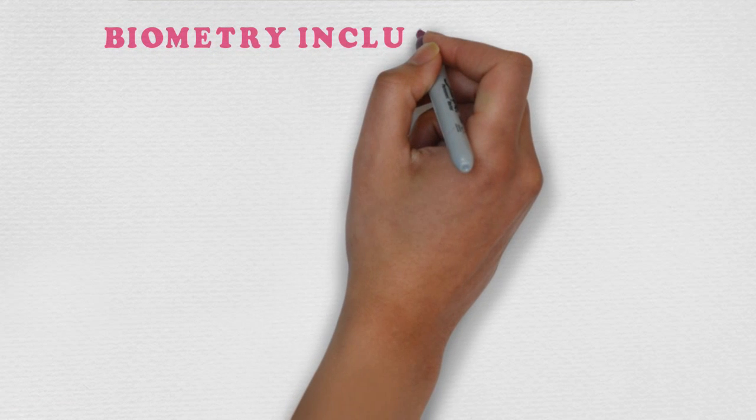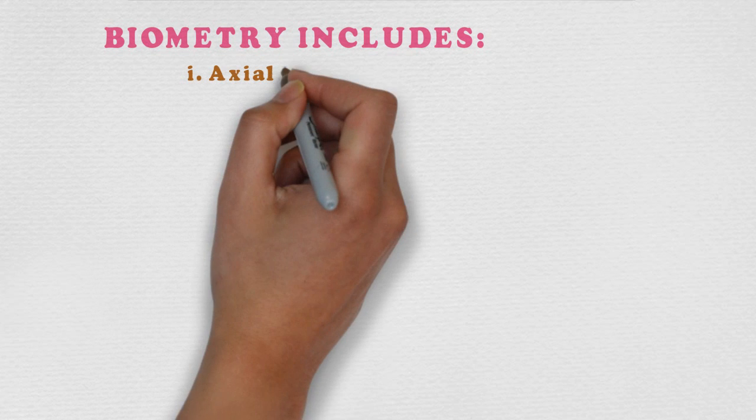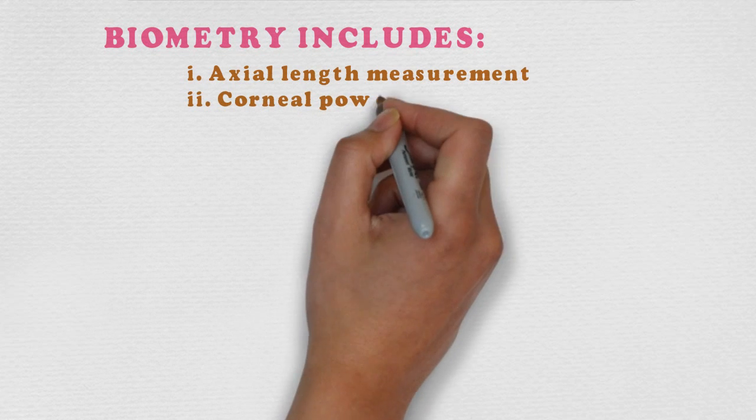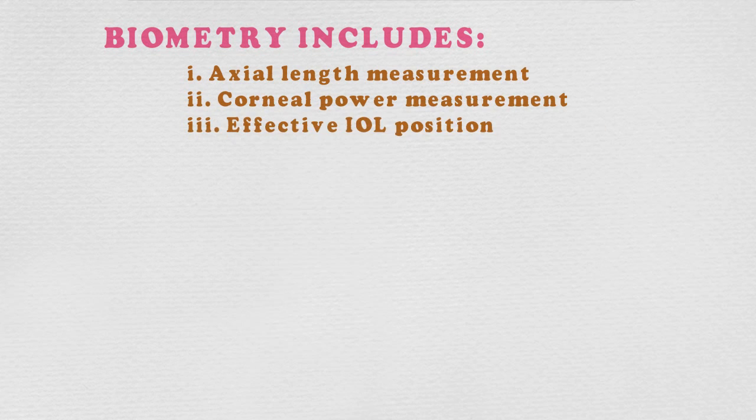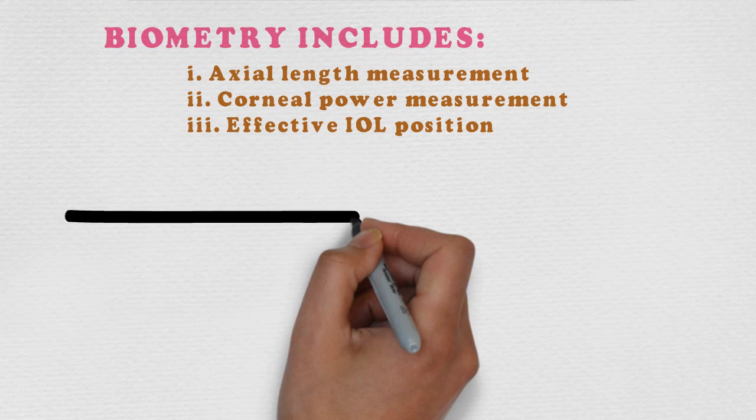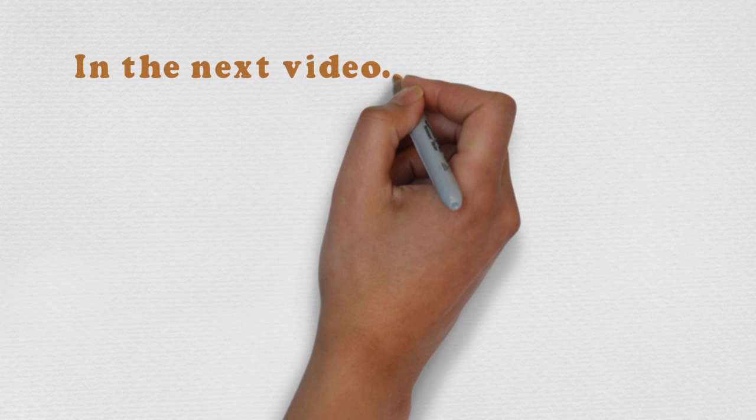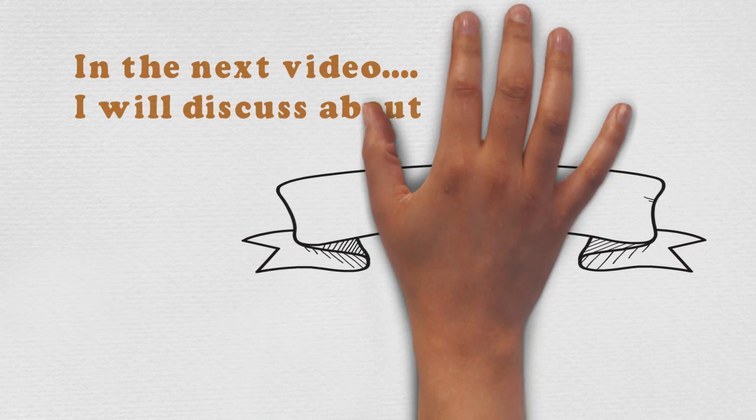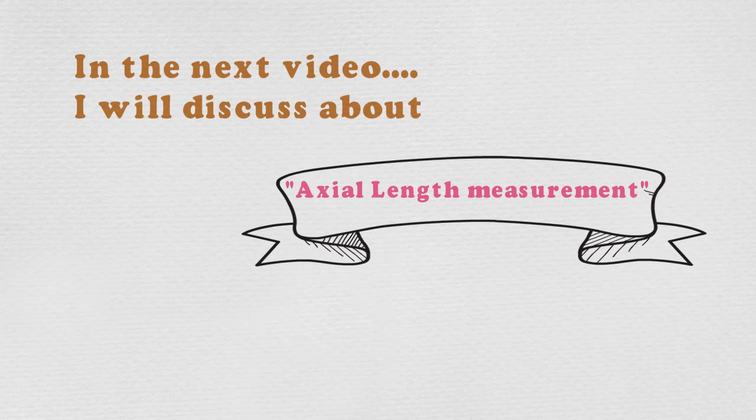Biometry basically includes axial length measurements and effective IOL position. In the next video I will discuss about axial length measurement. Stay with Smart Optometry.